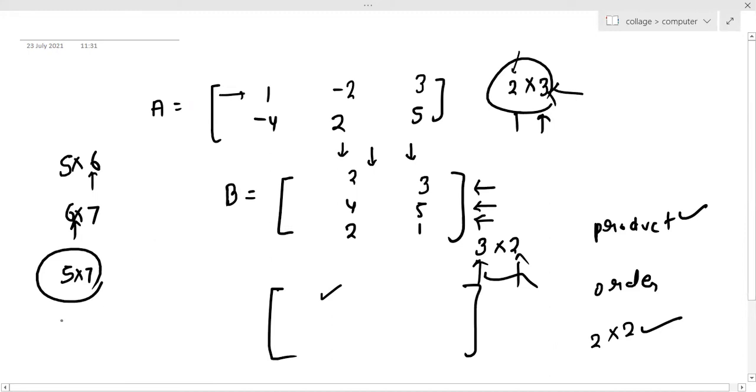So how do we do this? First element here is the first row and first column. The corresponding elements will multiply: 1 times 2, minus 2 times minus 2, and then 3 times 2. And you add them: 2 minus 4 plus 6. So it will be 0.